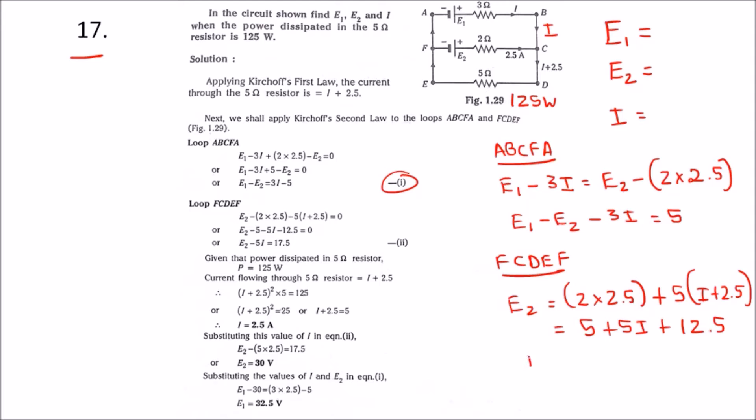Further simplifying E2, we will get 5i plus 17.5. This is our second equation.